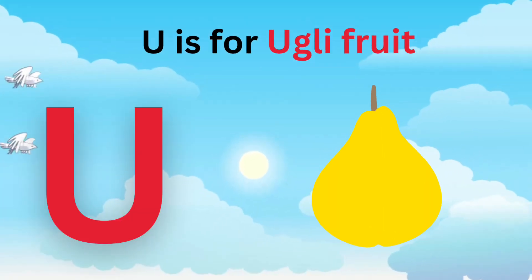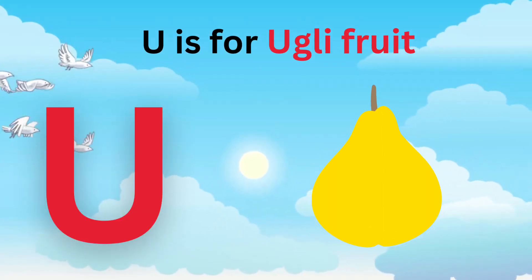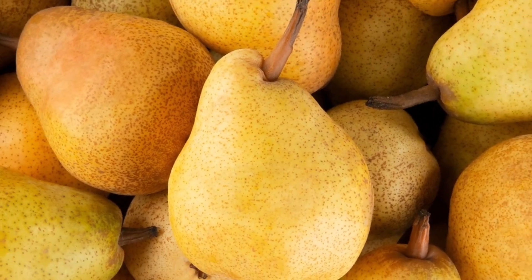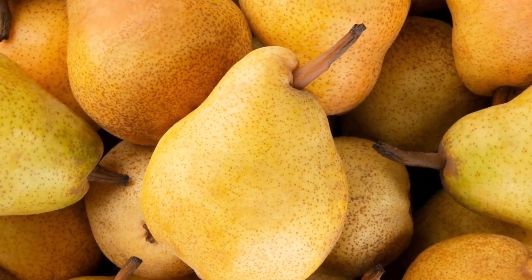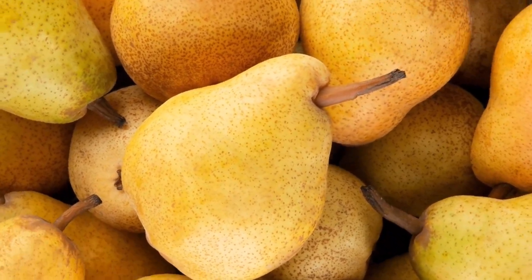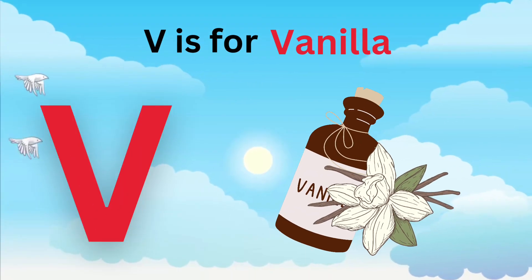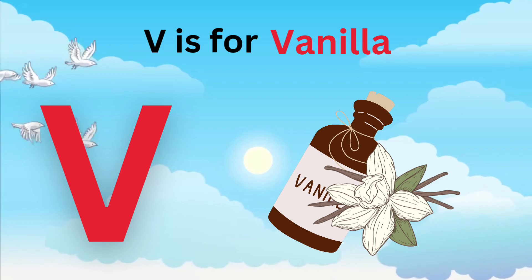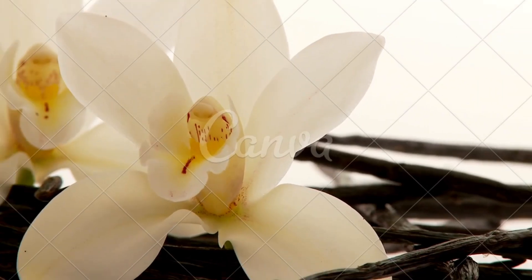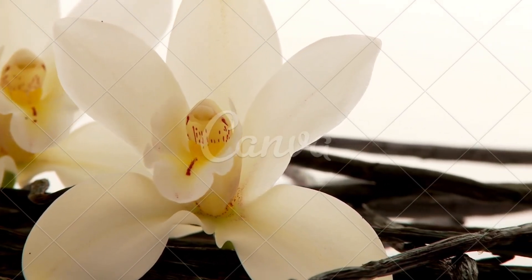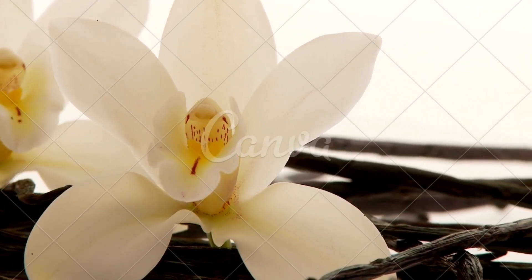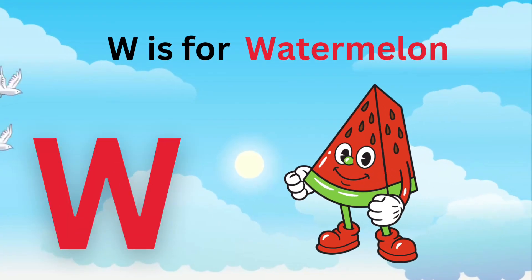U is for Ugly Fruit. R, R, Ugly Fruit. U is for Ugly Fruit. R, R, R. V is for Vanilla. W, W, Vanilla. V is for Vanilla. W, W, W.